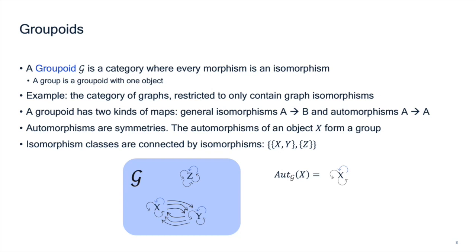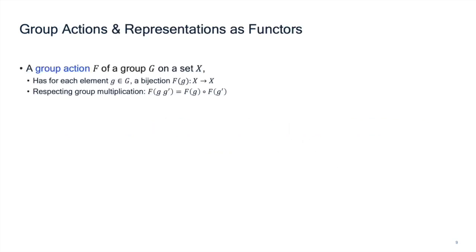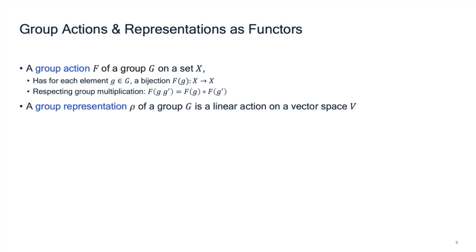In a groupoid, every object in an isomorphism class has an automorphism group that is isomorphic to each other, and between any two objects in an isomorphism class, you have as many arrows as there are elements in the automorphism group. X and Y are like equivalent views on the same object, so we want the symmetry properties to be the same. A group action of G on a set X means that for every element of the group we have a set bijection, and we require that this respects the group multiplication. If this group action is linear and X is a vector space, we call this a group representation.